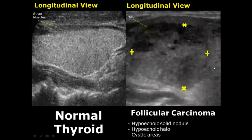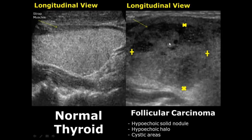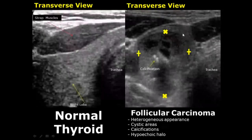Follicular carcinoma is the malignant form of this. It will have a hypoechoic halo, a hypoechoic nodule, and it can have some cystic areas. These appearances overlap with other appearances, so we cannot confirm it on ultrasound. A transverse view of follicular carcinoma also containing calcifications. Here you can see a thin hypoechoic halo and cystic areas.